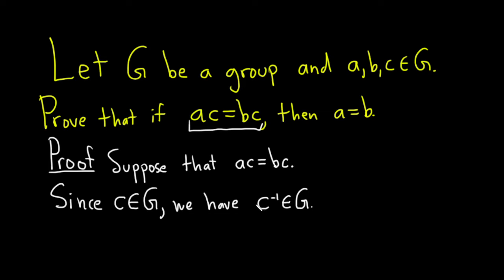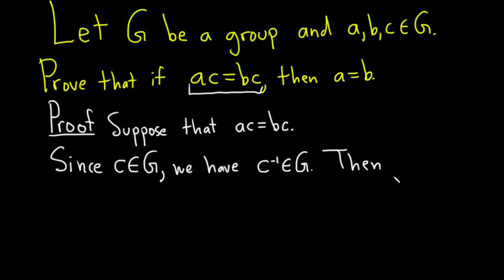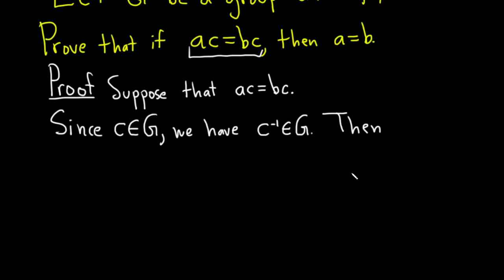It's one of the properties required, part of the definition of a group. So then what we'll do is multiply this equation on the right by c inverse. And when you multiply an equation, you have to multiply both sides. So then ac, parentheses, c inverse is equal to bc, parentheses, c inverse.